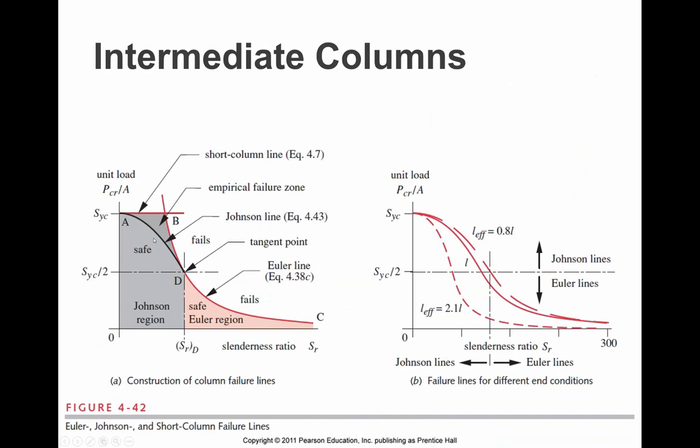So if we look at this graph, we just defined the Euler line. Here is this curve. And again, we've stated that the critical load divided by the area is equal to pi squared E divided by the slenderness ratio. So that's this curve.